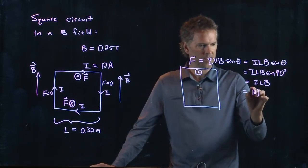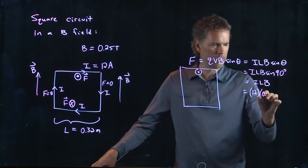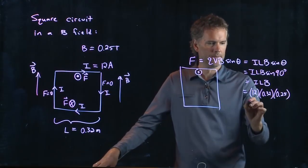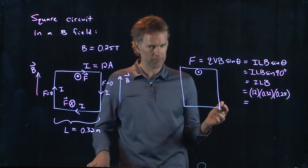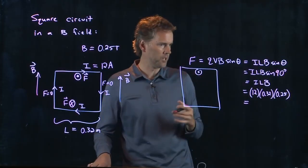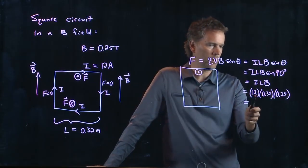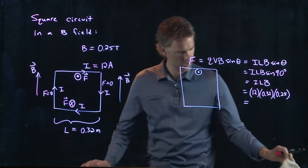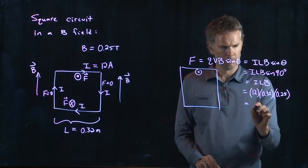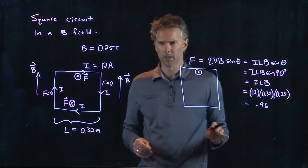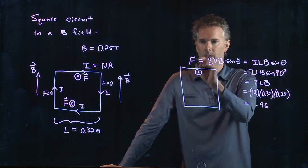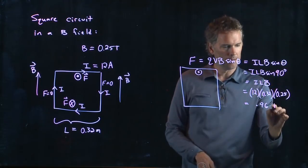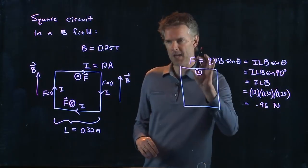I is 12 amps, that's SI units. L is 0.32 meters. And B is 0.25 Tesla. Let's run those numbers and see what we get. Punch it into your calculator. I'll approximate it here. We got a quarter of 12, which is 3. 3 times 0.32 has got to be really close to 1, maybe more like 0.96. And it's a force, so these SI units—amps times meters times Tesla—gives you newtons. That's the force on the top wire.